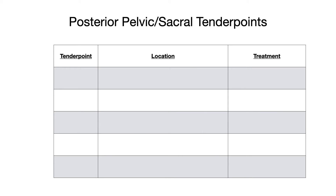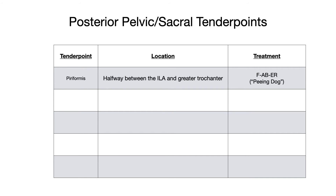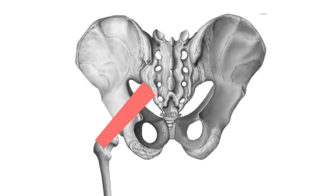Let's switch gears and talk about posterior pelvic and sacral tender points. The first big one is the piriformis. The piriformis tender point is located on the belly of the piriformis muscle, halfway between the ilia and the greater trochanter. Treatment position is flexion, abduction, and external rotation — sometimes referred to as the peeing dog position. When someone's being treated for the piriformis tender point, their leg assumes the position a dog would take raising its leg to urinate. On the diagram, the piriformis tender point is located in the belly of that muscle, roughly halfway between the ilia and the greater trochanter of the femur.